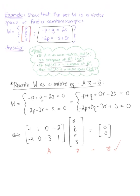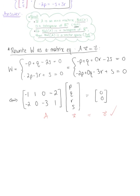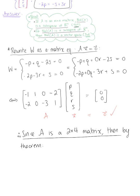And we're able to conclude using theorem 1, that therefore, since matrix A is a 2 by 4 matrix, then by the theorem, we are able to conclude that W is equal to Null(A).